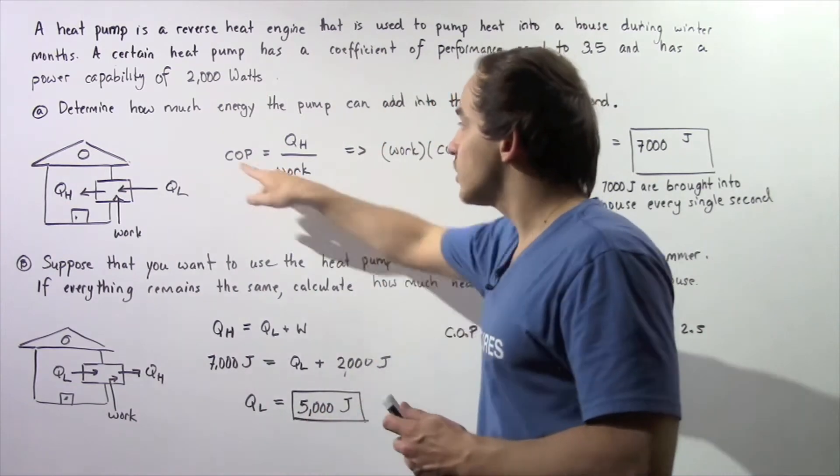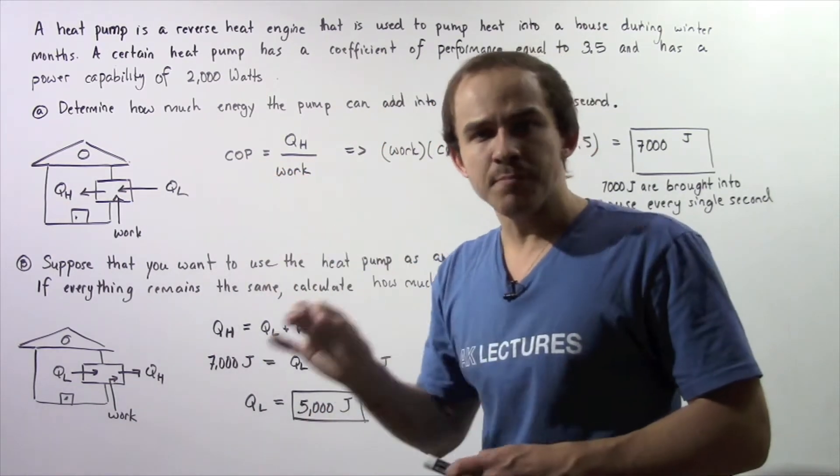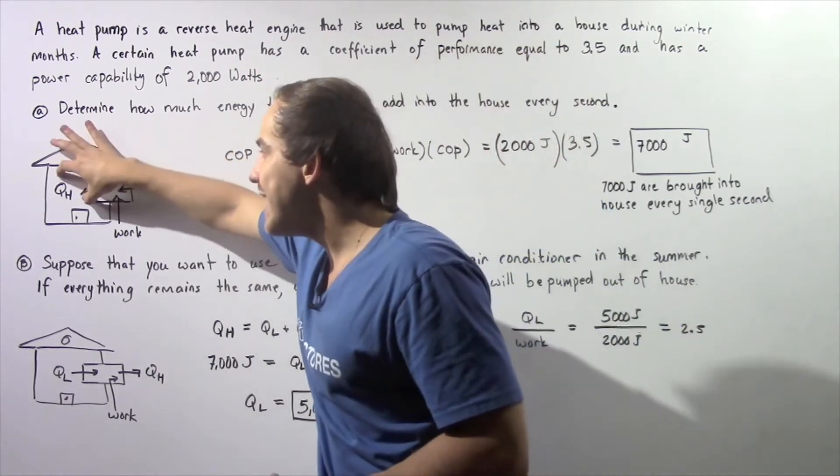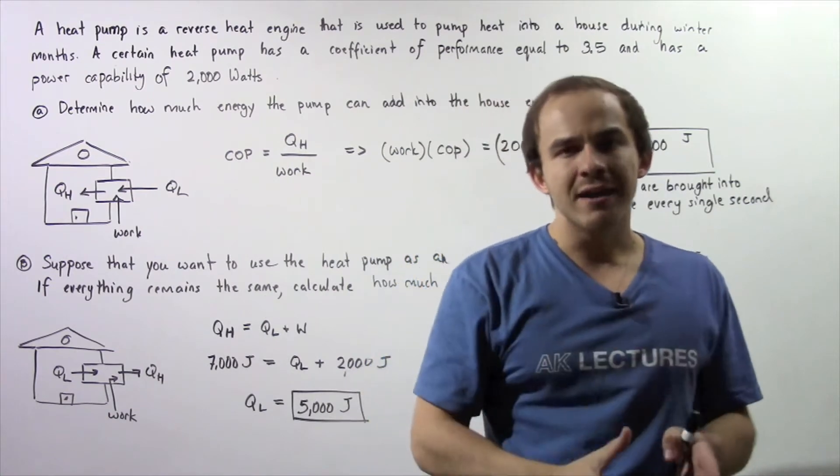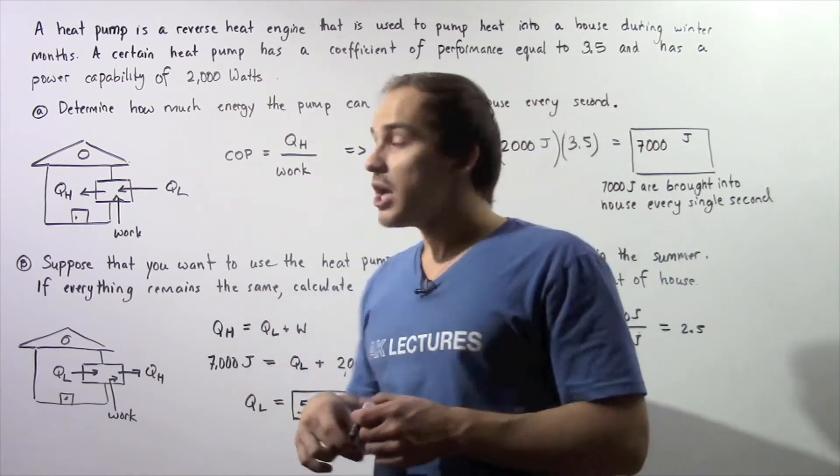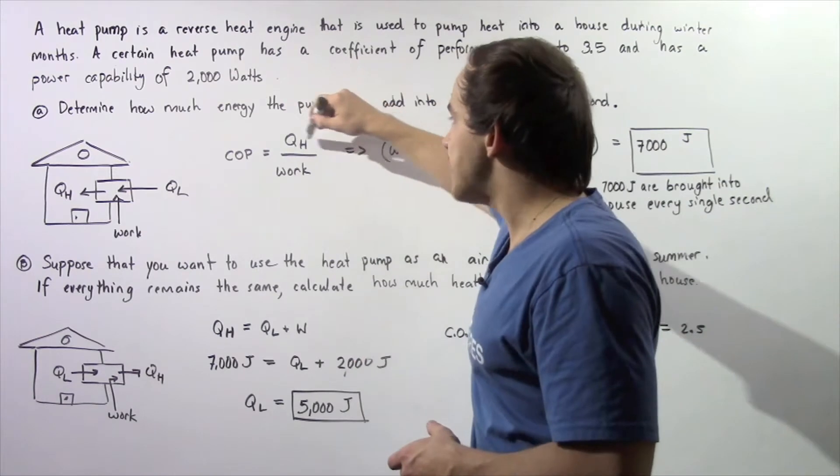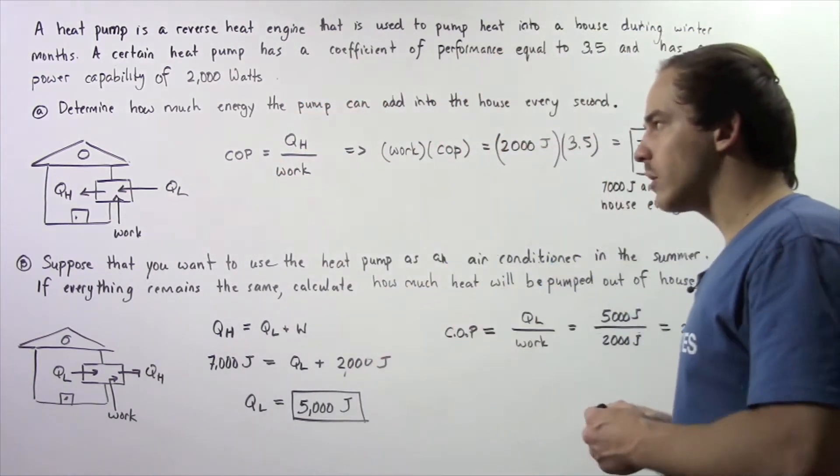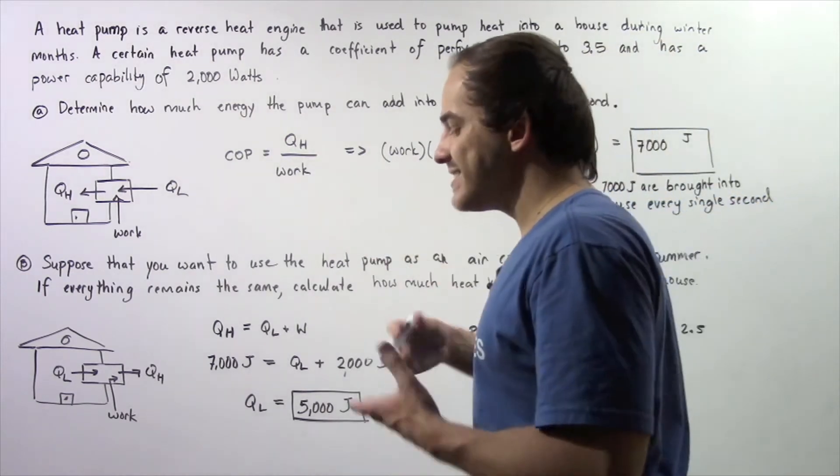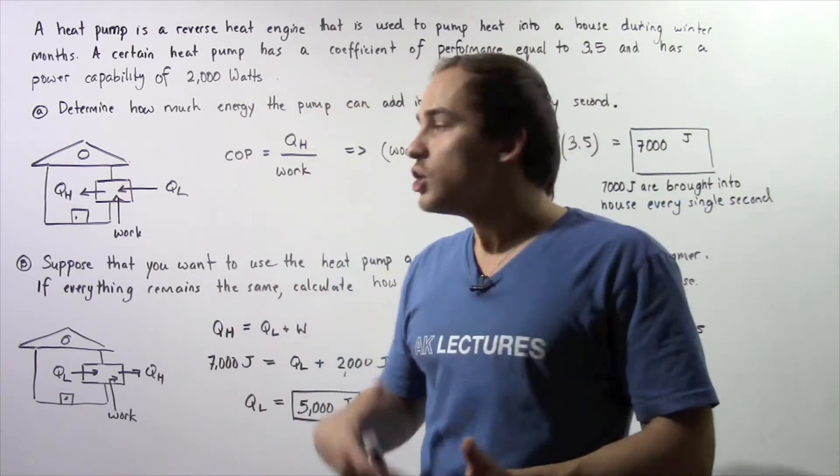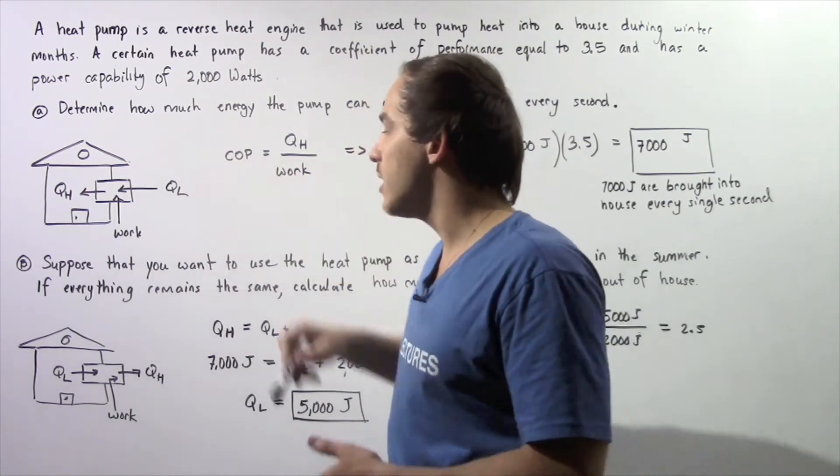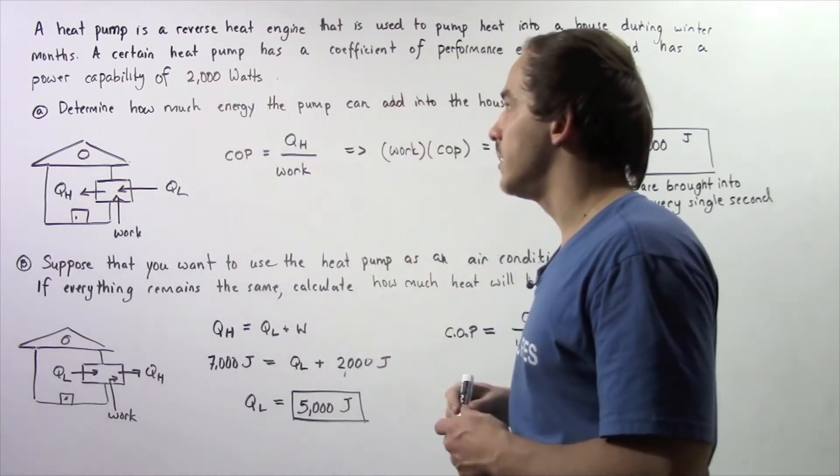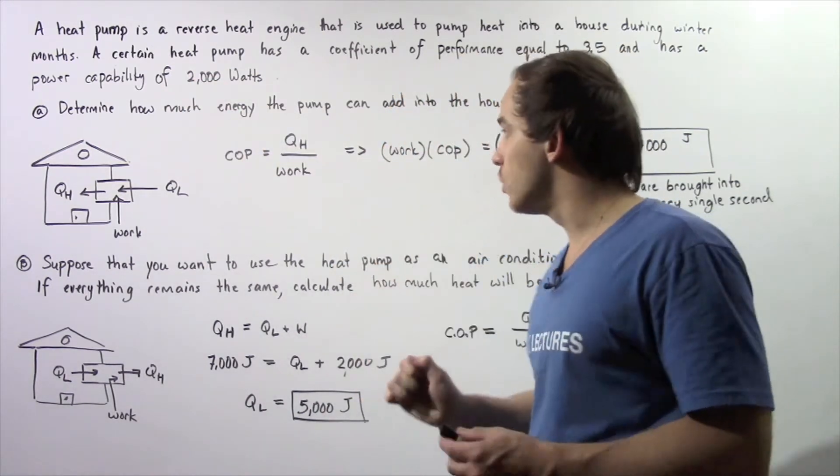The coefficient of performance for any heat pump is equal to QH divided by work. The QH is the total amount of energy that is brought into the house. The work is how much energy is required to bring this quantity of heat into the house, and we know from the power capability that work is 2,000 joules.